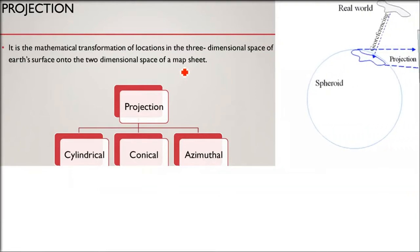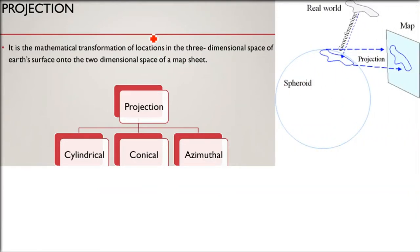So projection - first thing you have to understand, the earth is not a ball structure or egg type structure. Both shapes are not there. Very complicated shape. So we try to model it using a spheroid, ellipsoid. We try to model the earth and then try to do the computation, calculation, location, indication.